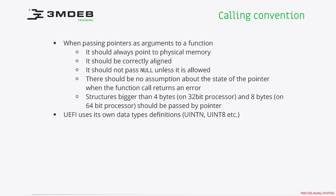When passing pointers as arguments to a function, there are some rules. First, pointers should always point to physical memory and should be correctly aligned. The caller should make sure not to pass null unless it is allowed by the specification. There should be no assumption about the pointer state when a function call returns an error — if we pass a pointer and the function fails, we should not assume anything about the content of the memory behind that pointer.